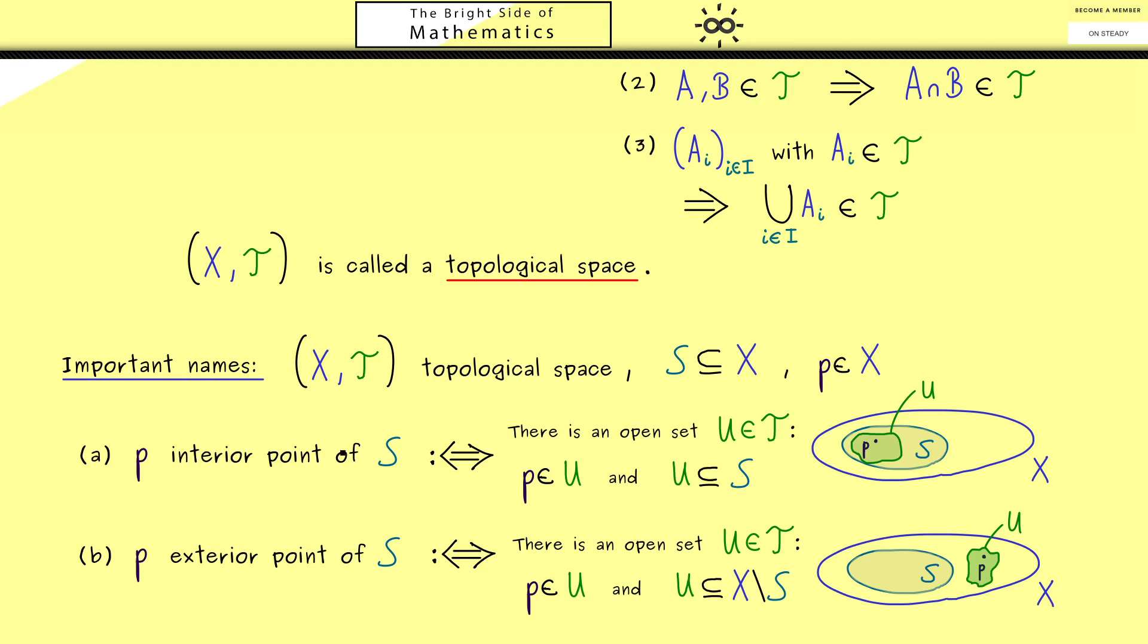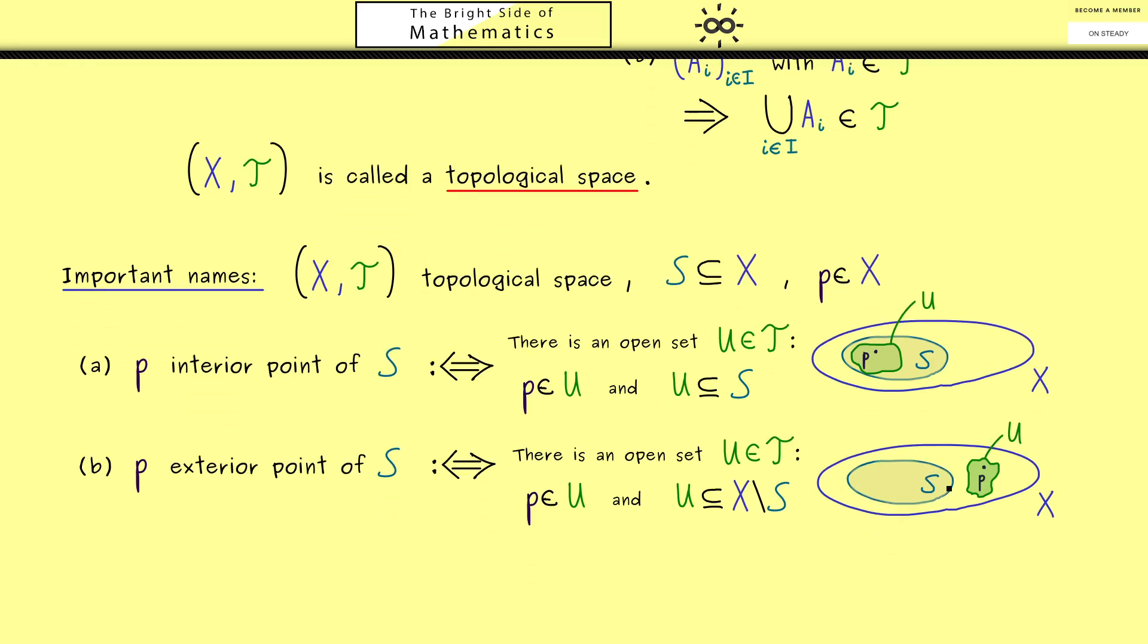Now we have two important terms here, and you see in our picture we have described all the points inside the set S and all outside of S. Therefore, the points missing are the ones on the boundary of S. For this reason, we could define p to be a boundary point of S if it is neither an interior point nor an exterior point.